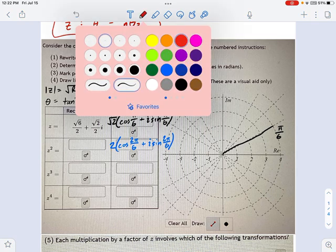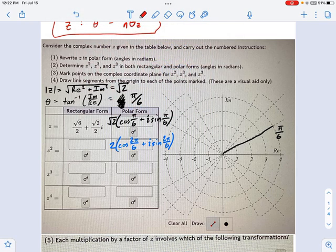And then what happens if I cube z? Well, this is going to be radical 2 times radical 2 times radical 2. That'll be 2 radical 2 for the modulus.